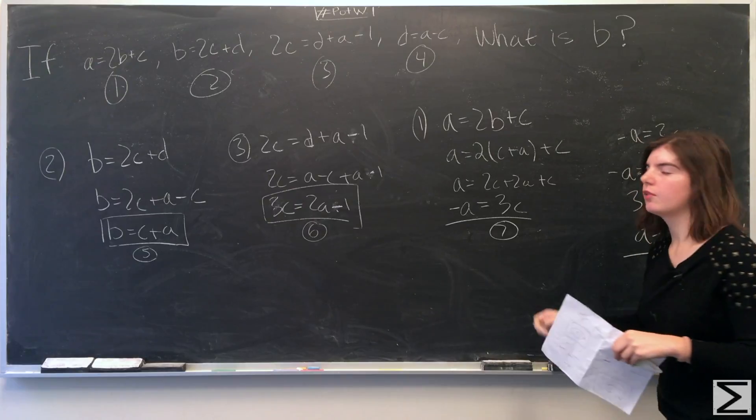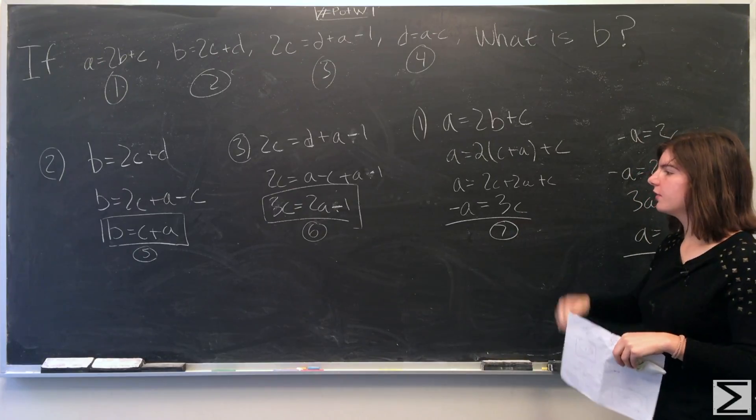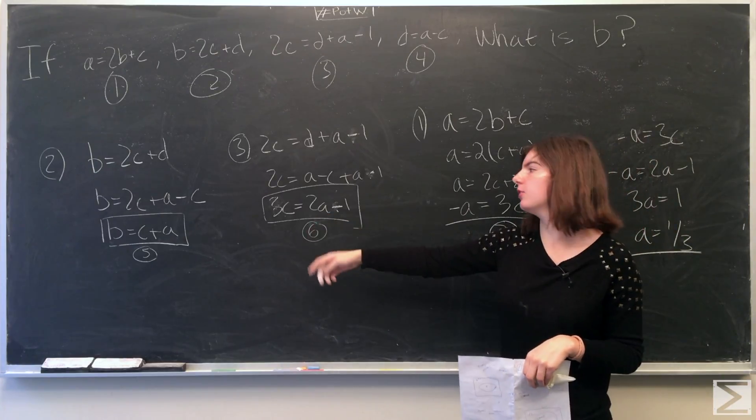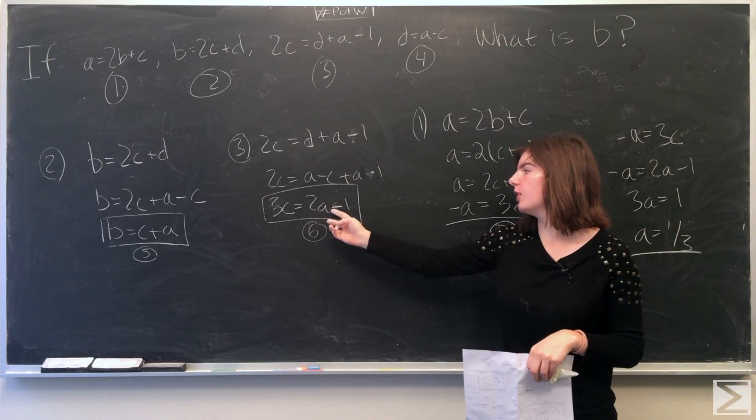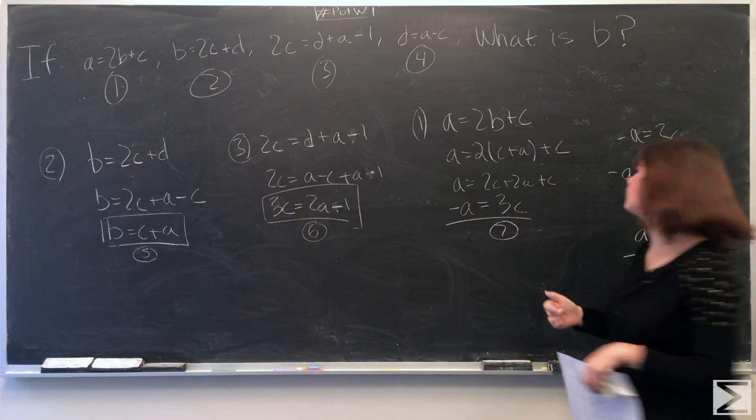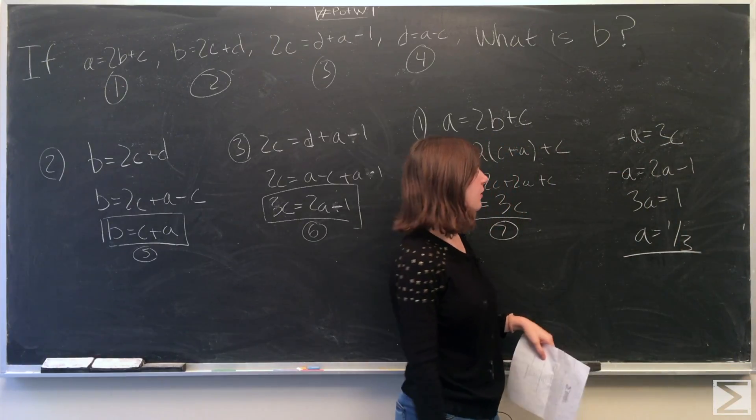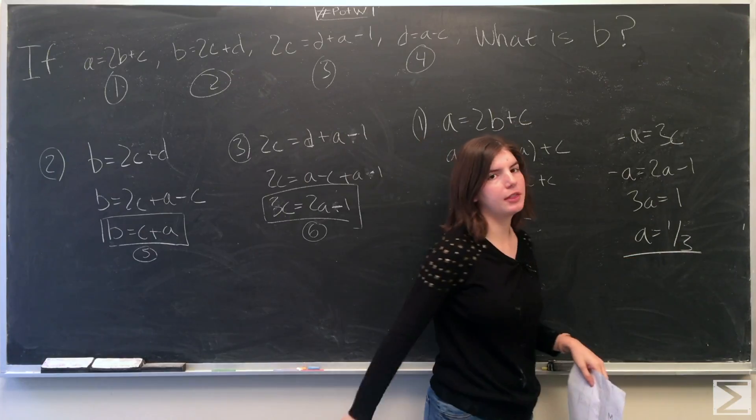So we found that negative a equals 3c, and from equation 6 we have 3c equals 2a minus 1. So just substitute 2a minus 1 for 3c. We have negative a equals 2a minus 1. Solving it, we get a equals one-third.